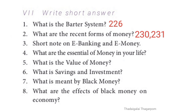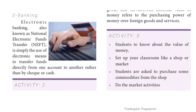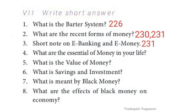Q3: Short note on e-banking and e-money. Answer from page 231. Electronic money is money which exists in banking computer systems and is available for transactions through electronic systems. Electronic banking, also known as National Electronic Funds Transfer (NEFT), is simply the use of electronic means to transfer funds directly from one account to another rather than by cheque or cash.